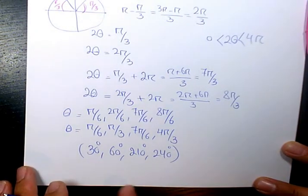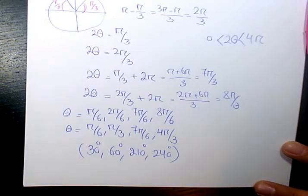So these are the four answers to this question. Pi over 6, pi over 3, 7 pi over 6, and 4 pi over 3.